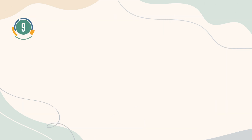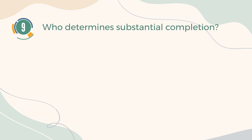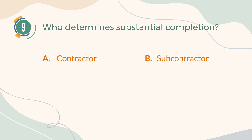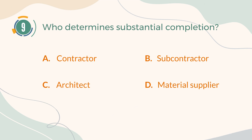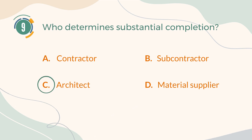Number 9. Who determines substantial completion? A. Contractor. B. Subcontractor. C. Architect. D. Material supplier. The correct answer is C: architect.